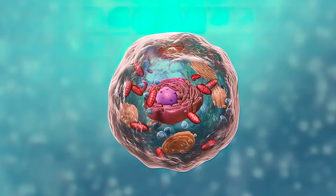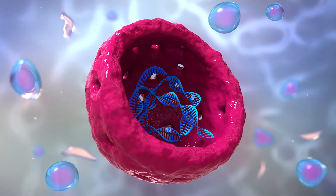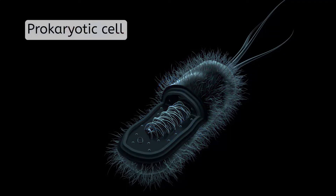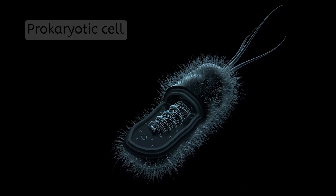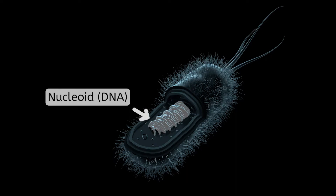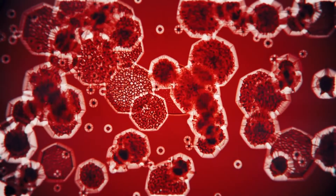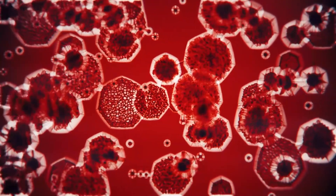Hopefully you remember from your unit on cells that DNA is found in the nucleus of the cell — except, of course, in prokaryotic cells, because they don't have a nucleus. In their case, the DNA tends to congregate in a region of the cell called the nucleoid, but it isn't protected by a nuclear membrane like it is in a eukaryotic cell. Regardless of where it's located, all cells have DNA, because all cells have to make protein.